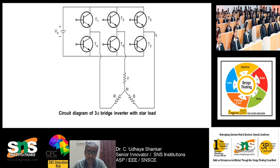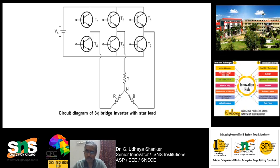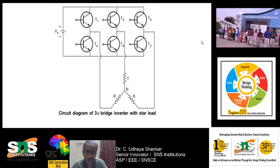The feedback diodes are needed to feed the energy stored in the inductance back to the source, so that energy can be used for charging the battery or returned to the source. Otherwise that energy will be dissipated as heat in the transistors, their life will be reduced, and short circuits may happen. Normally we use a diode across the transistors when using an RL load. For this explanation we are going with the R-load type three-phase inverter.